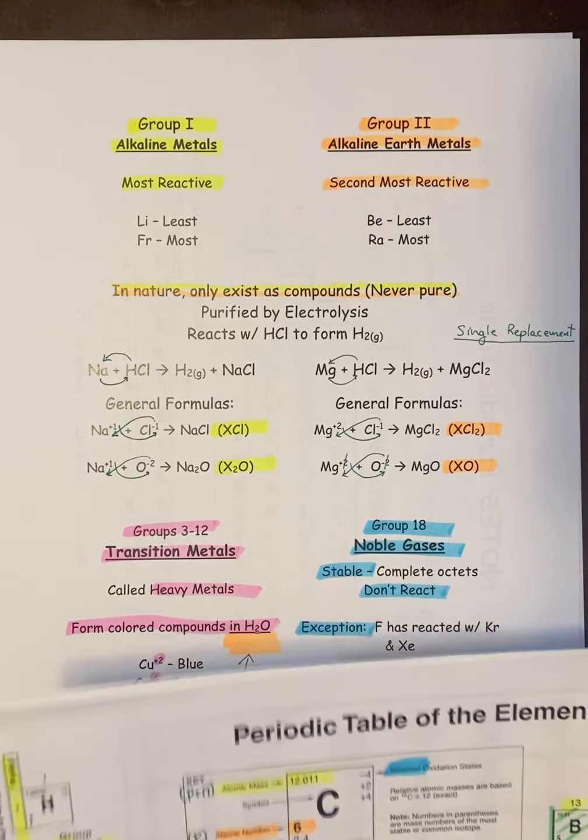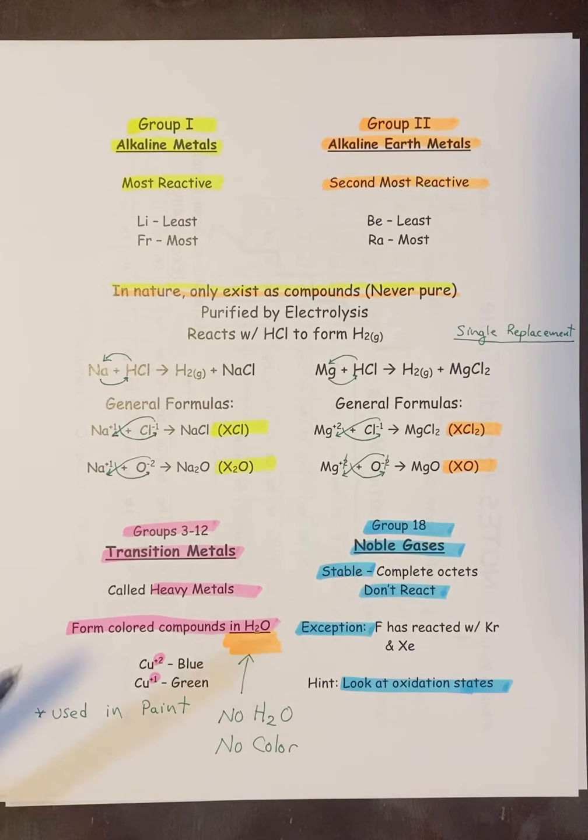Now, the next two groups, we can do them one at a time because they don't really have as much in common. Groups 3 through 12 and some extra, which are kind of like under the staircase, they're called transition metals. They are also sometimes called heavy metals. Their claim to fame is they make colored compounds.